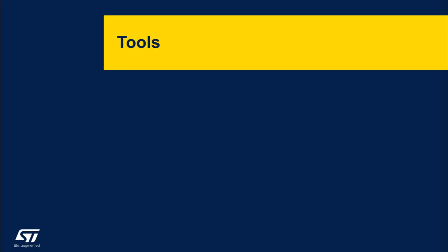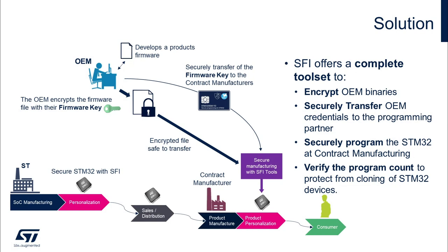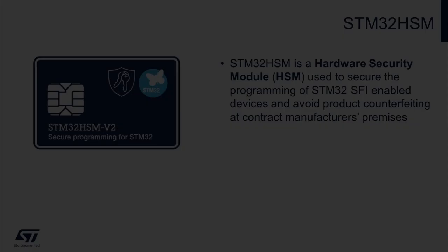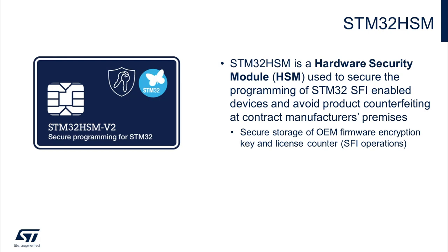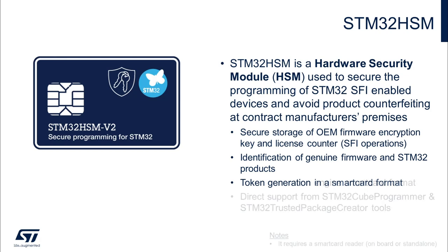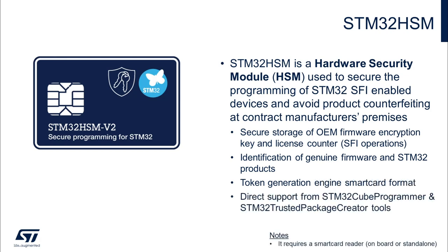Now let's look at the tools necessary to perform the SFI process. To secure the transfer of the OEM key, ST introduced STM32HSM, a hardware security module used to secure the programming of STM32 SFI-enabled devices and avoid product counterfeiting at contract manufacturers' premises. The OEM key is securely stored in the HSM smart card, which guarantees the same level of protection as your credit card. Main features of STM32HSM include: secure storage of the OEM firmware encryption key and license counter for SFI operations, identification of genuine firmware in STM32 products, and a token generation engine in smart card format. It is directly supported by STM32CubeProgrammer and Trusted Package Creator tools, and can be purchased for evaluation on st.com.